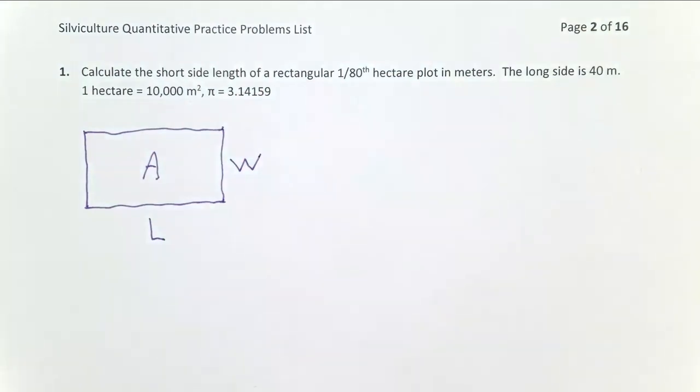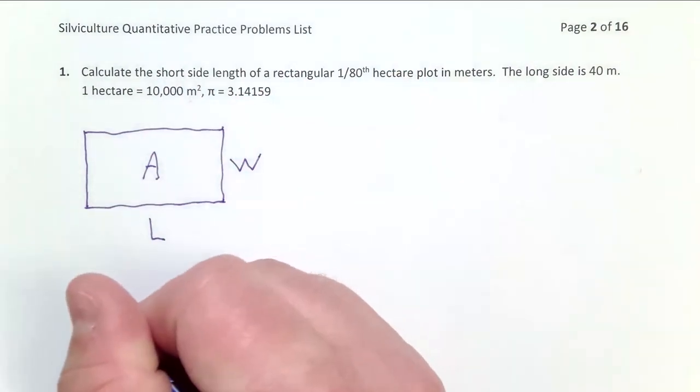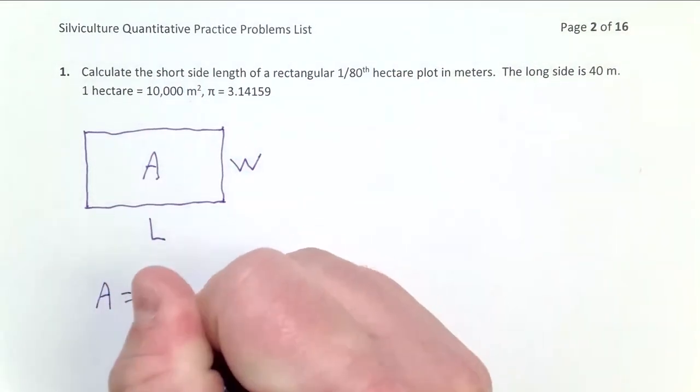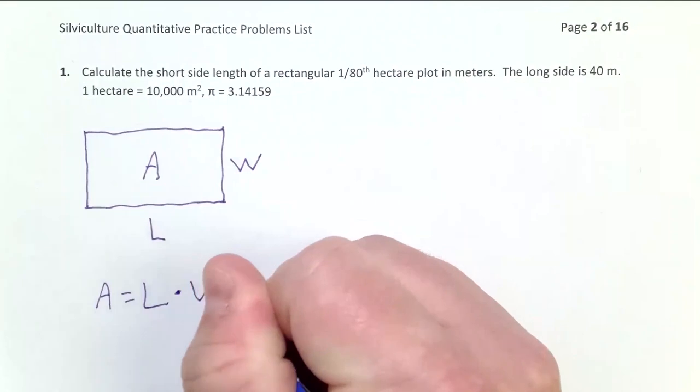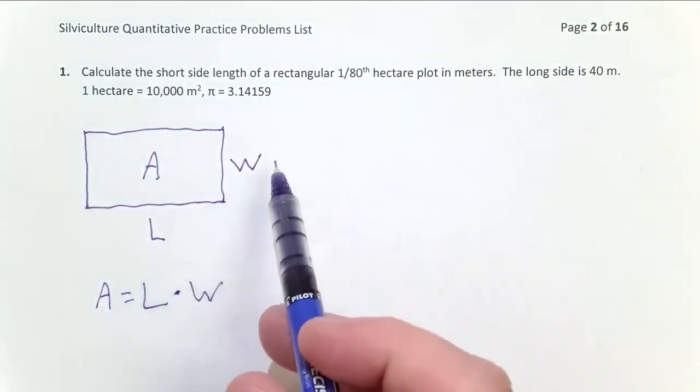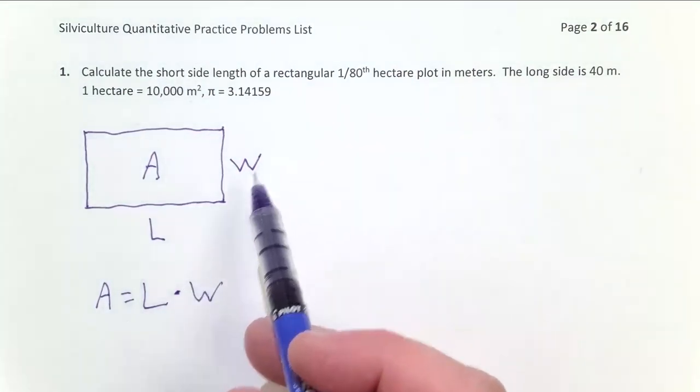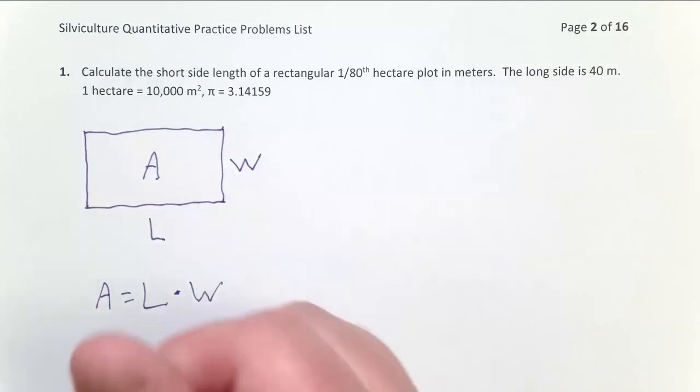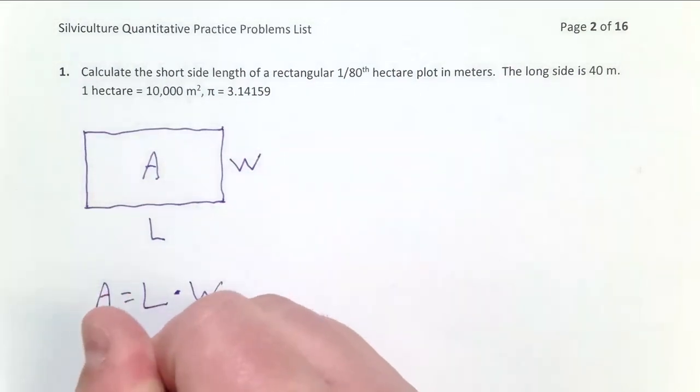Now we know the formula for the area of a rectangle is area equals length times width. And what we want again here is the width. And so we need to solve for that. And so we're going to end up with the equation area over length is equal to the width. I simply divided both sides of this equation by the length. So once we have that, we'll start plugging in numbers.